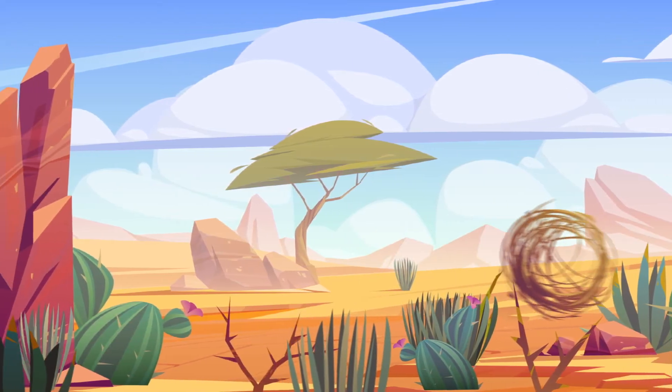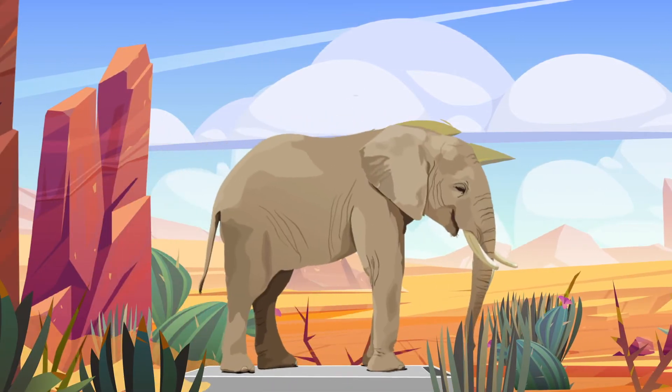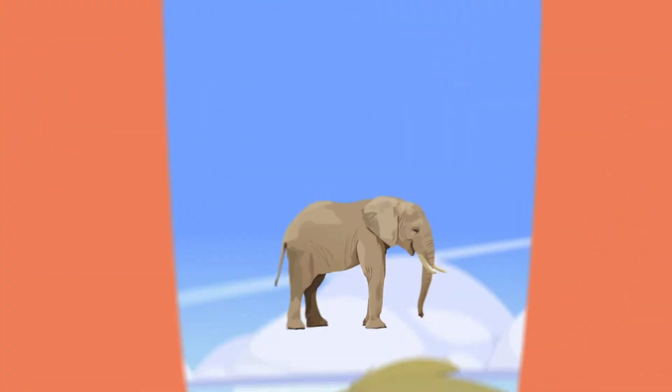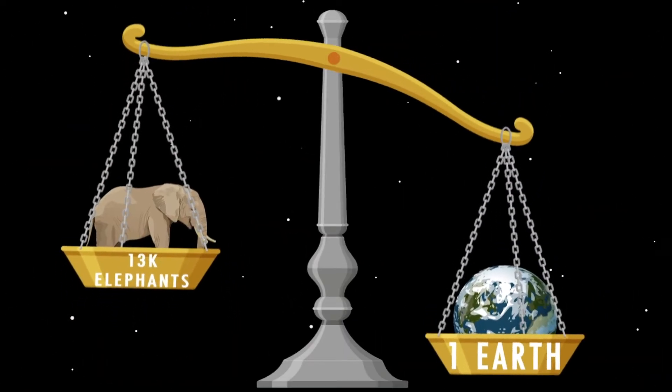To put it into context, a male African bush elephant tips the scales at 13,000 pounds. One trillion elephants would weigh 13,000 trillion pounds, and the earth weighs one billion times more than that.